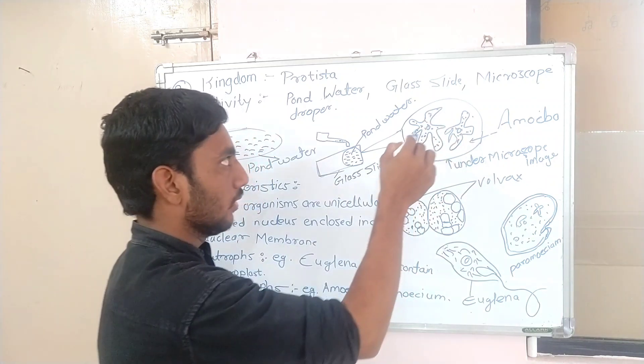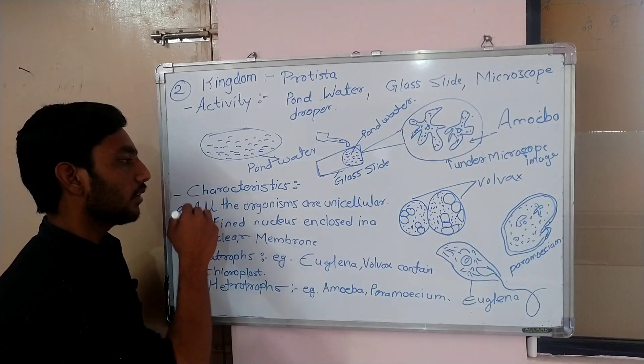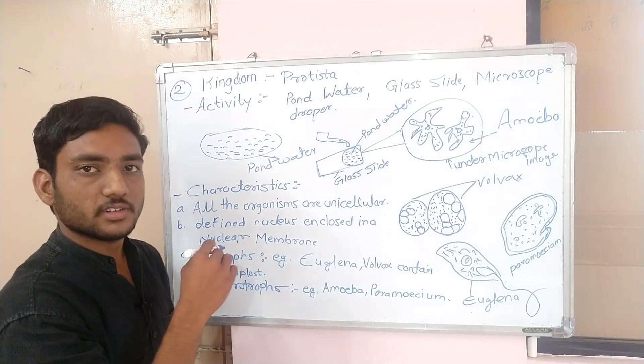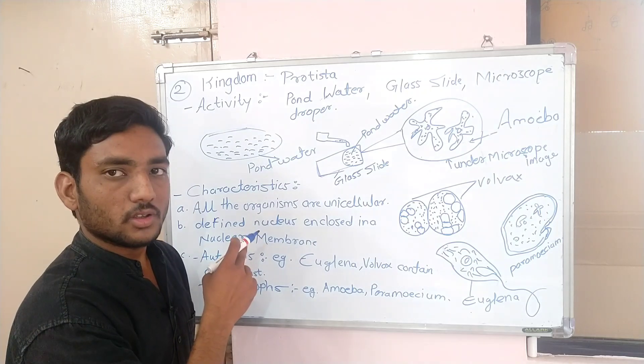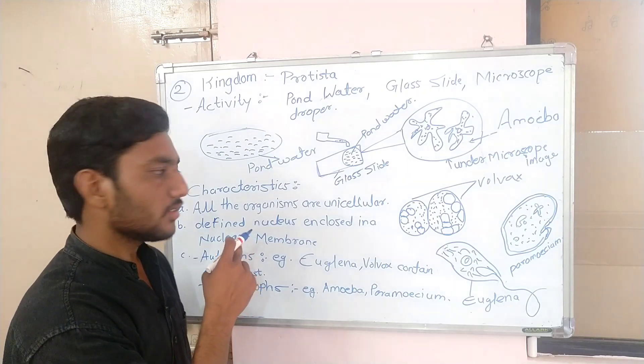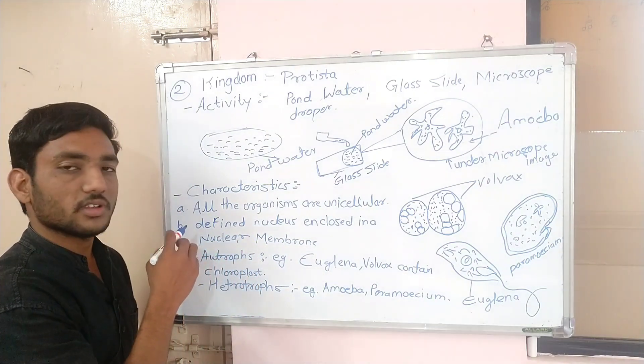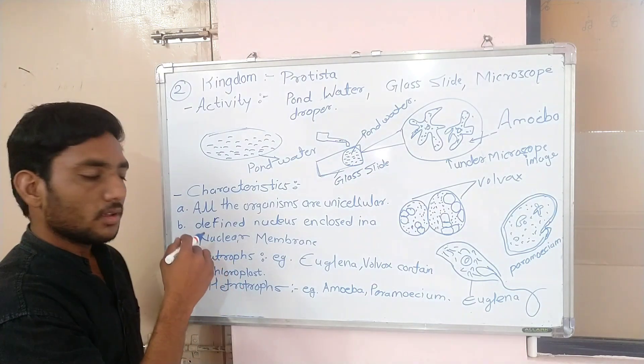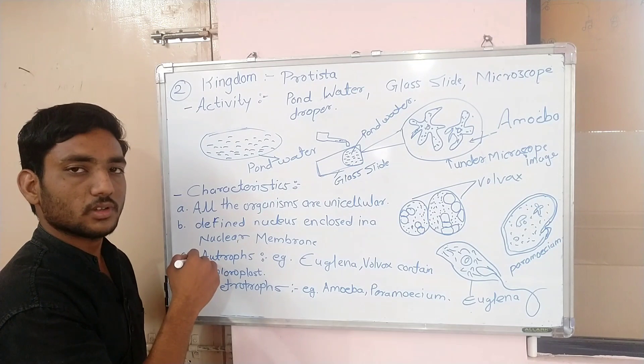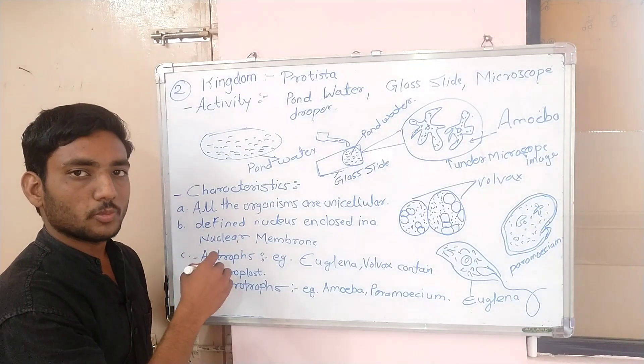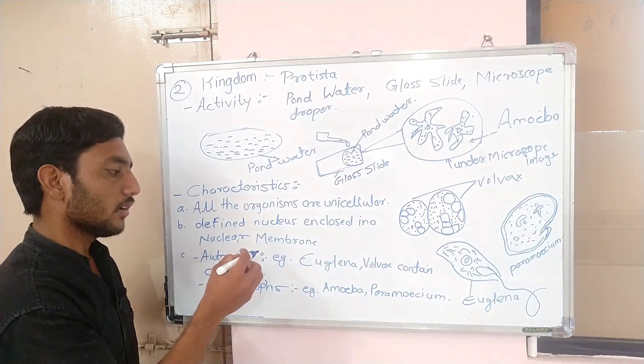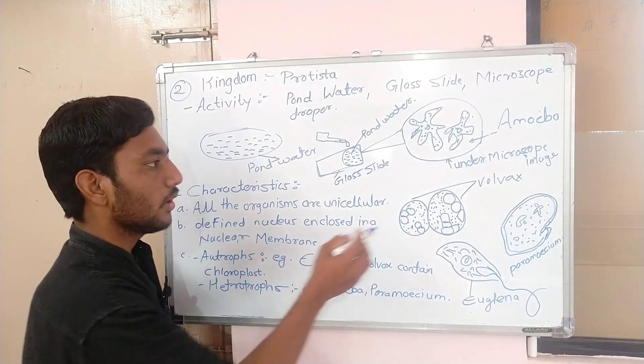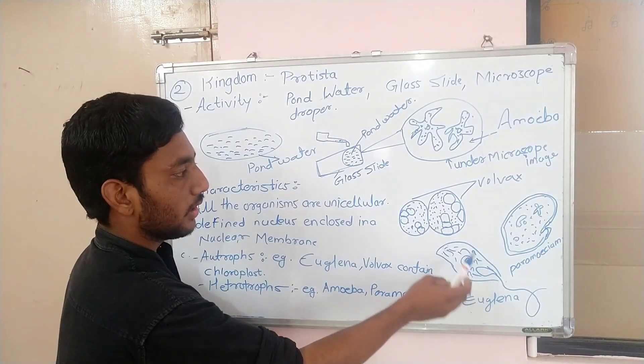Next is characteristics. Characteristics: first characteristic is unicellular organism. Next is defined nucleus enclosing nuclear membrane. Next is autotroph or heterotroph. First, Euglena, Euglena and Volvex.